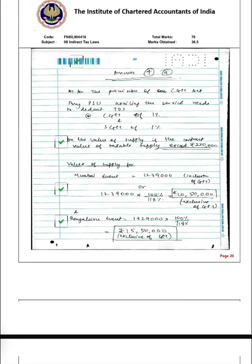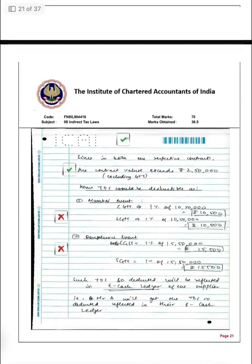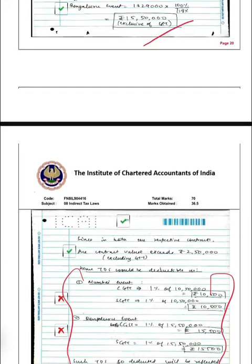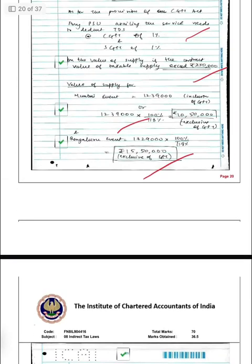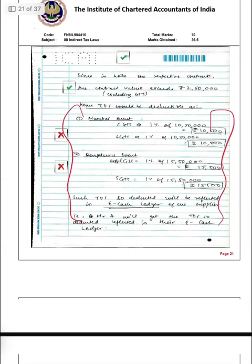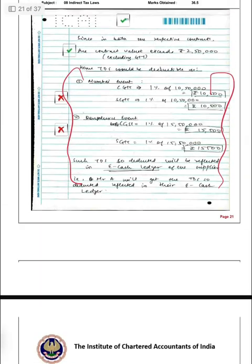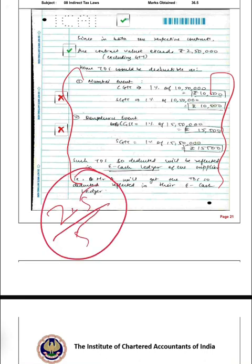The next part was on TDS and TCS. The approach was going well overall but my calculation was wrong in parts. Two parts of the question had errors — one part was wrong. I got 2 marks out of 5, with half marks cut for each wrong part.